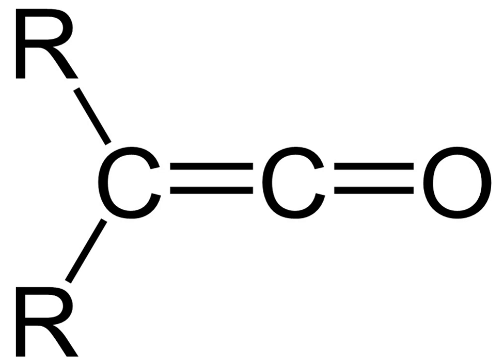A ketene is an organic compound of the form R-C=C=O. Ketene also refers to the specific compound CH2=C=O, the simplest ketene molecule, which is occasionally called ethanone.